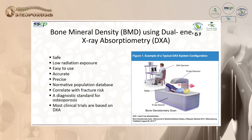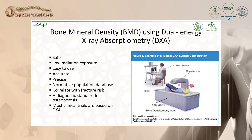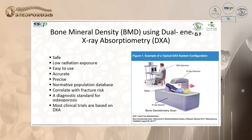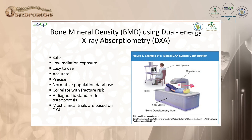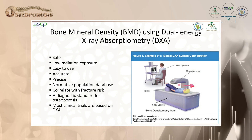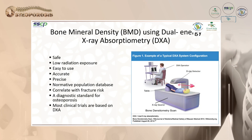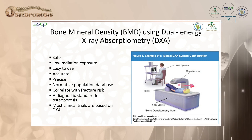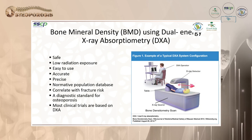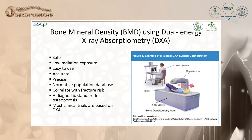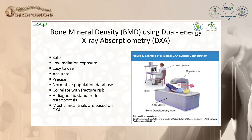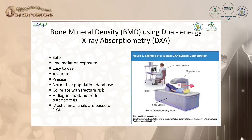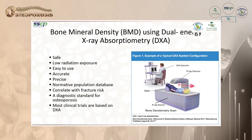There are three different types of DEXA machines available. The machines are safe, with low radiation exposure, easy to use, accurate, and precise, with normative population databases and correlation with fracture risk. DEXA is the diagnostic standard for osteoporosis, and most clinical trials are based on DEXA measurements.